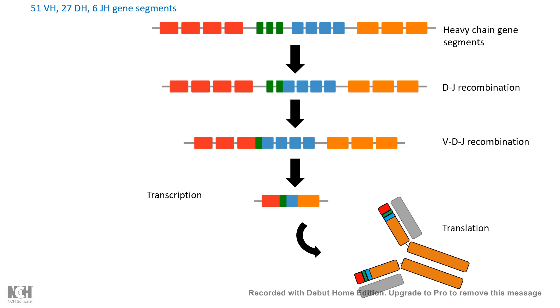In a combinatorial manner, huge diversity can be produced in the heavy chain itself. Using a combinatorial code, a plasma cell can produce a huge variety of antibodies.